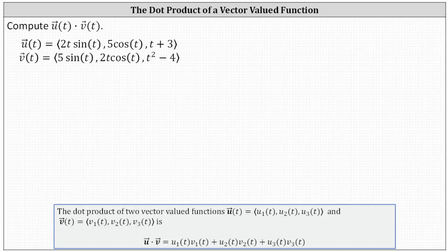Compute the dot product of the vector-valued functions u of t and v of t. We determine the dot product of a vector-valued function just like we determine the dot product of two vectors. We determine the sum of the products of the x, y, and z components.